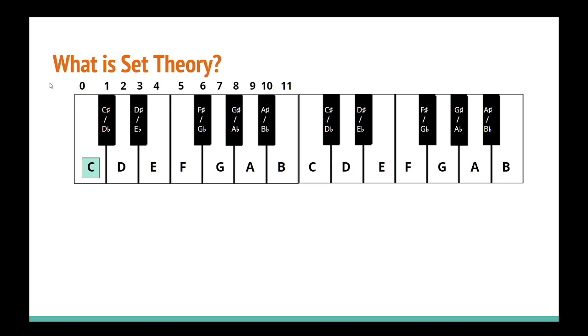If I were to place random notes above the C, say a C sharp, an E, and F. This chord would be named a 0, 1, 4, 5 chord.